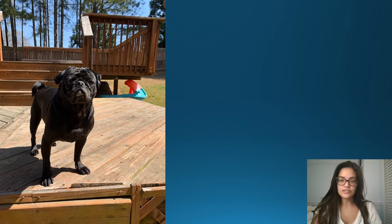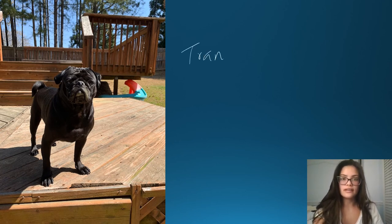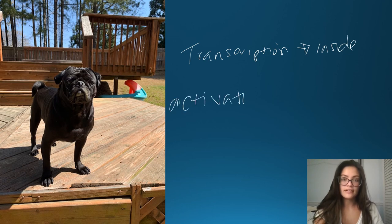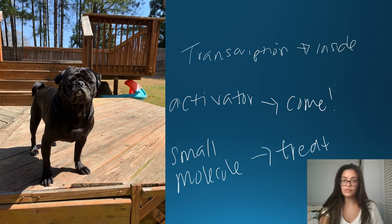Now let's use an analogy to explain positive inducible control. Here's my dog, Romeo — he's a pug. If anybody knows anything about pugs, they're super stubborn. He loves to be outside, and we can hardly ever get him to come inside. The only way we can do that is to yell 'come inside' and offer him a dog biscuit — we call it a cookie. In this analogy, transcription is him coming inside, the activator is the command 'come,' and our small molecule is the treat — the cookie. That is how positive inducible control works.